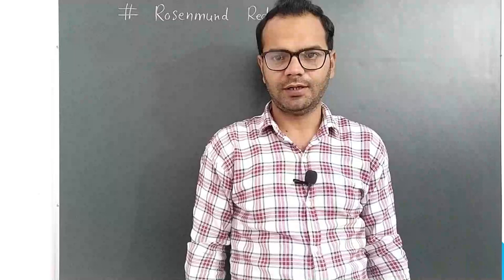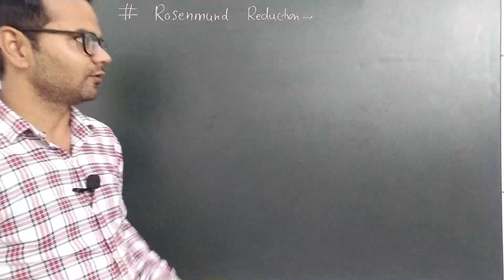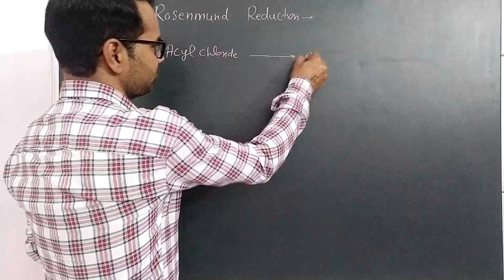Hello everyone and welcome back to my YouTube channel. Today we will discuss Rosenmund Reduction. This reduction involves the preparation of aldehydes from acyl chlorides. Fact number one: it is the conversion of acyl chloride to aldehyde.